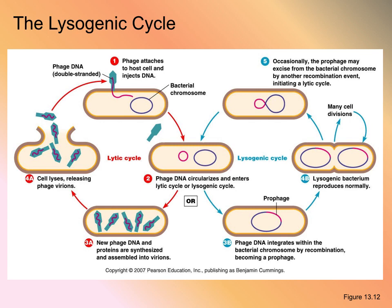If it turns into a prophage, the bacteria will reproduce normally through binary fission, causing multiple cell divisions, giving a whole population of bacteria that are prophage-infected. But at some point, the prophage is going to be excised out of the bacterial chromosome, initiating the phage DNA to move into the lytic cycle.